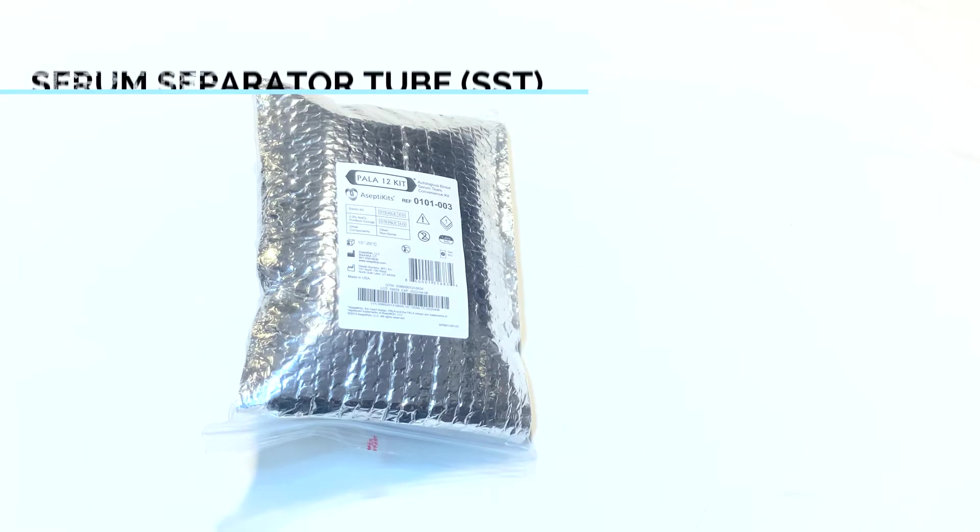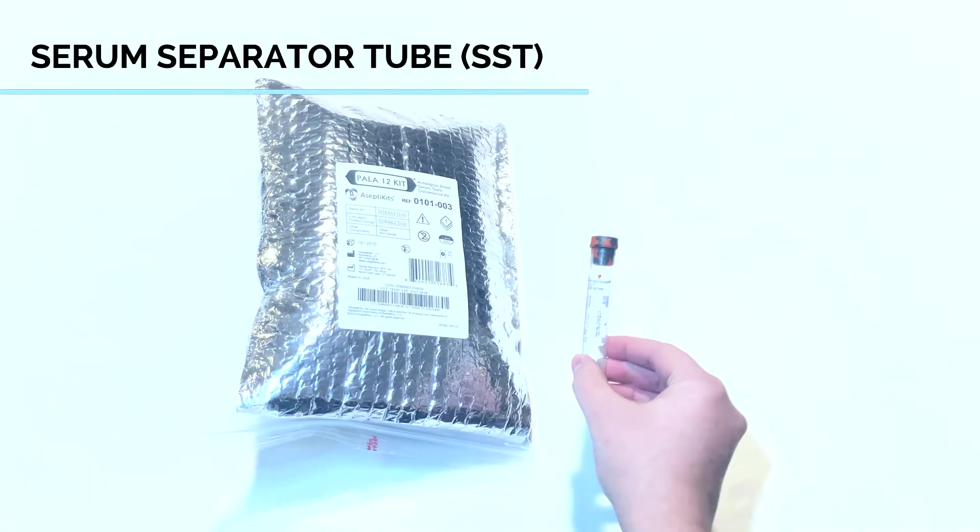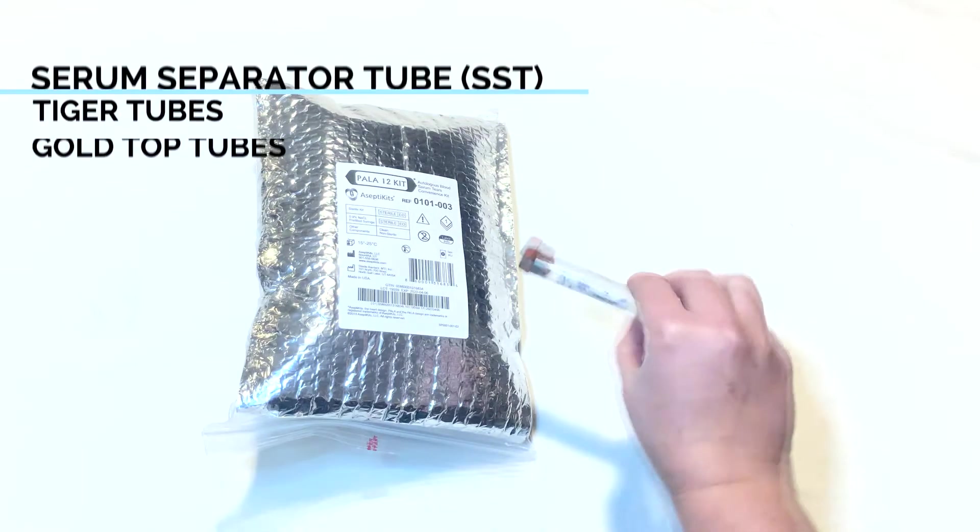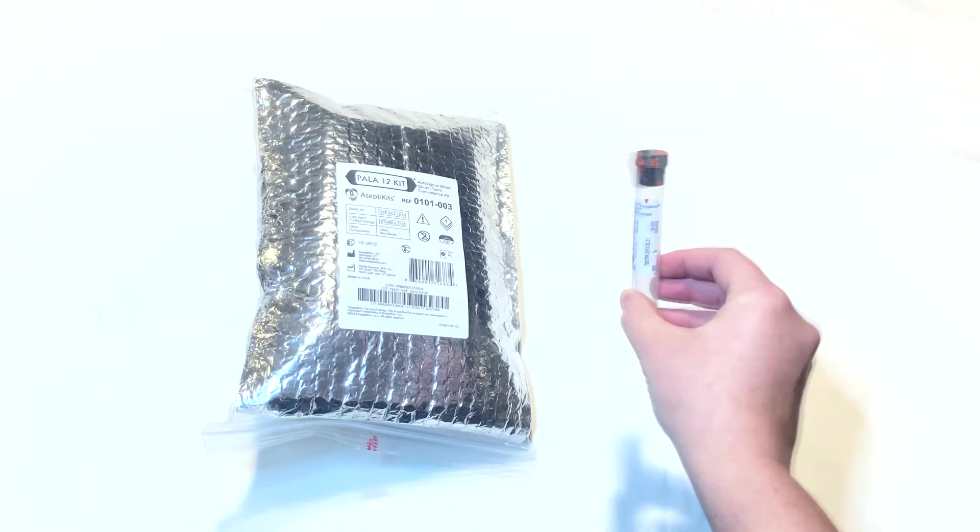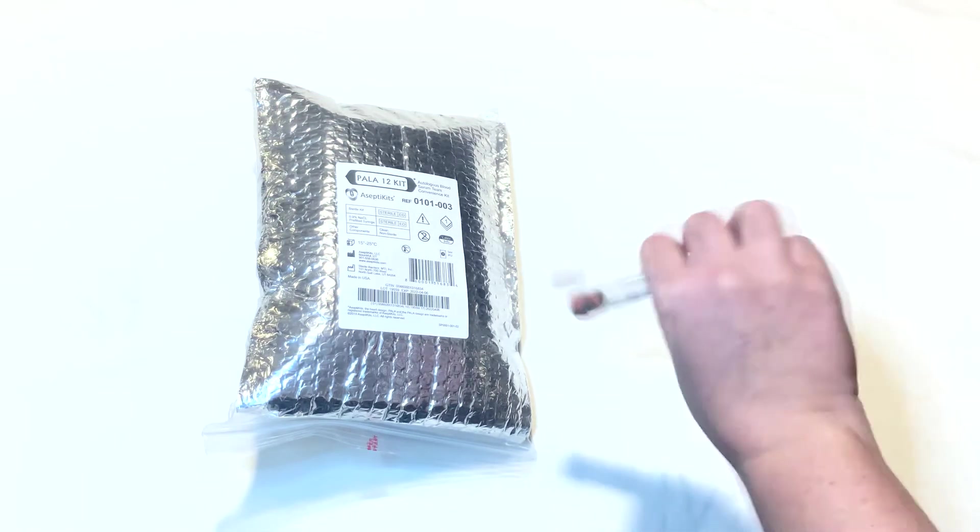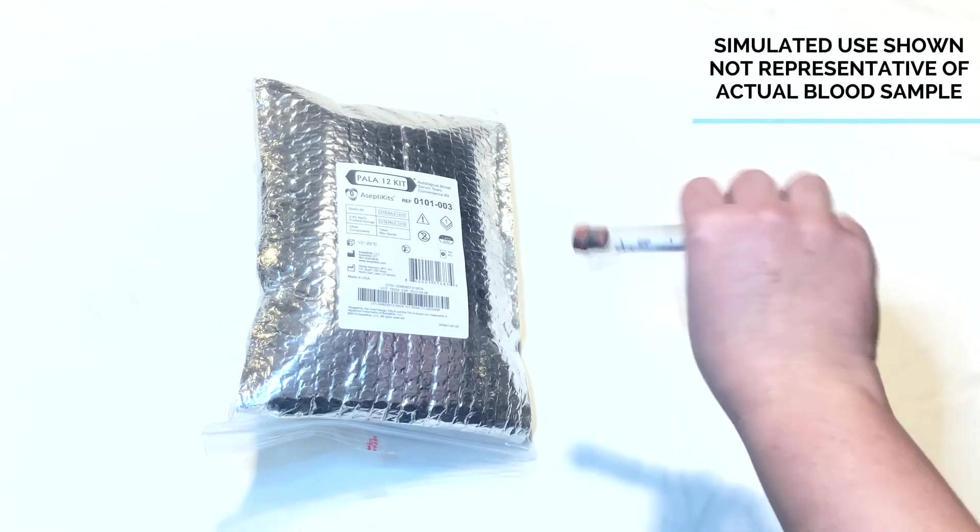Next, collect the prescribed volume of blood using a serum separator tube, also commonly referred to as tiger tubes or gold top tubes. Remember to completely invert the serum separator tube at least five times to ensure proper mixing of the clot activator with the blood.